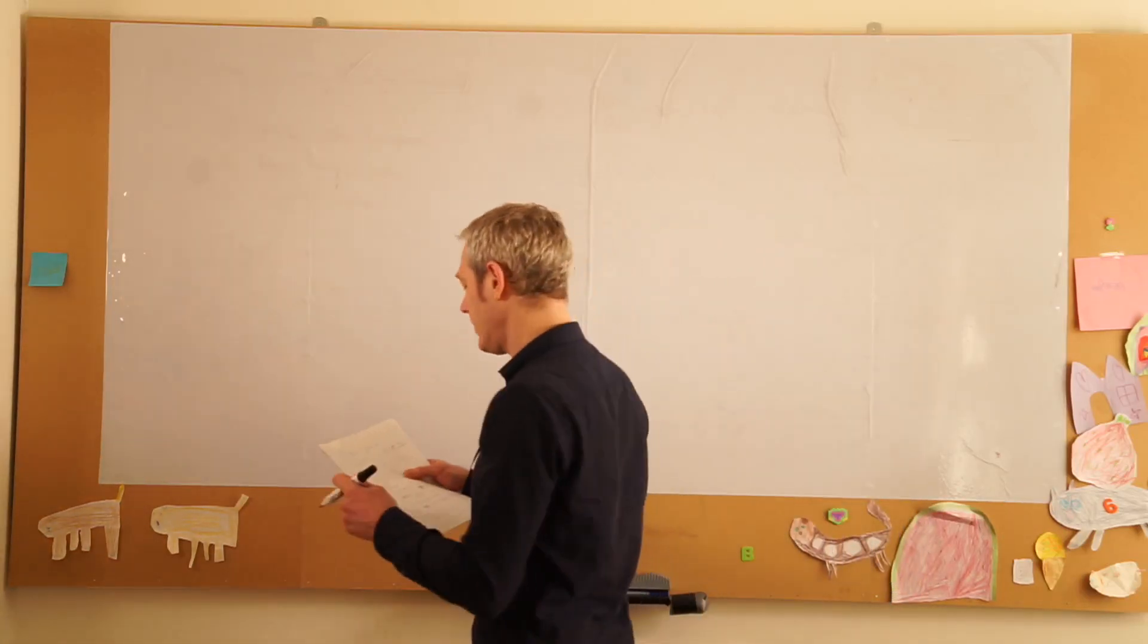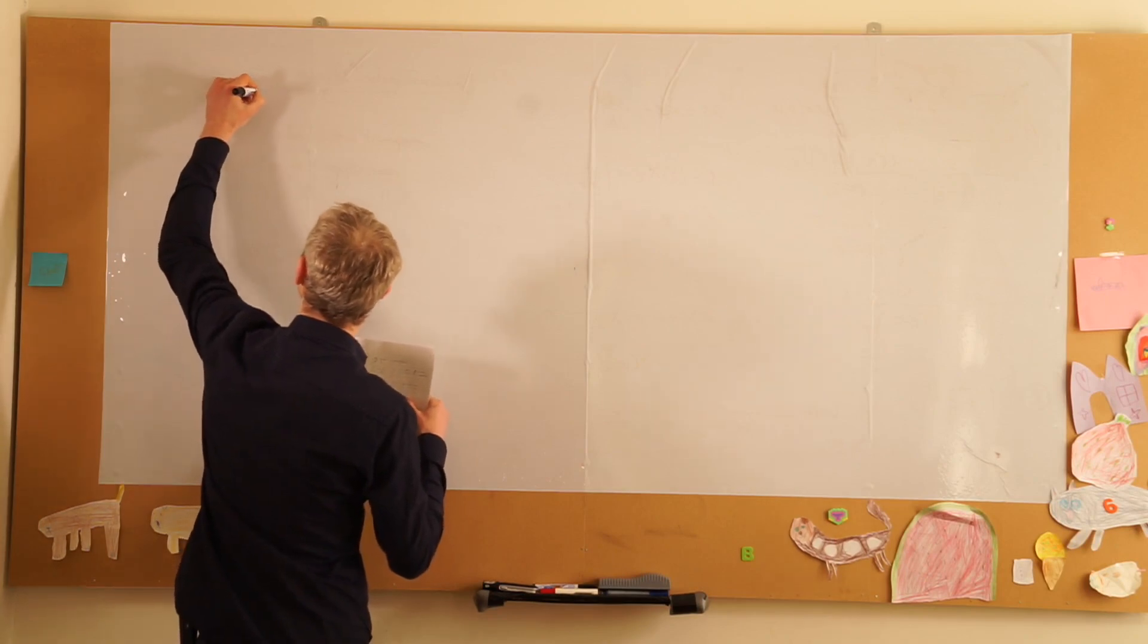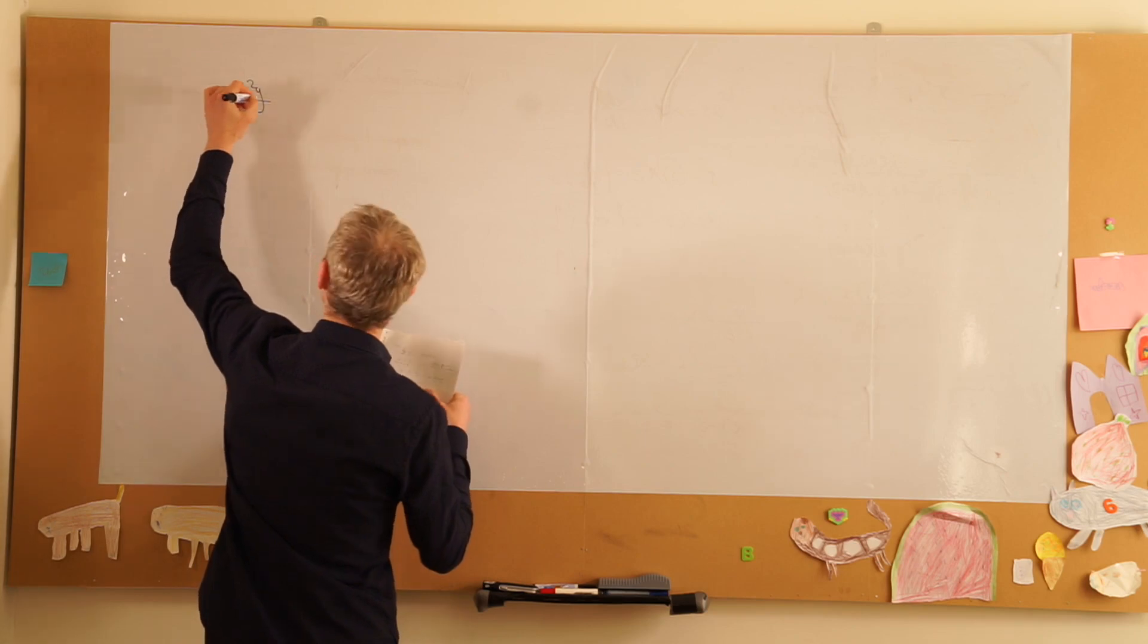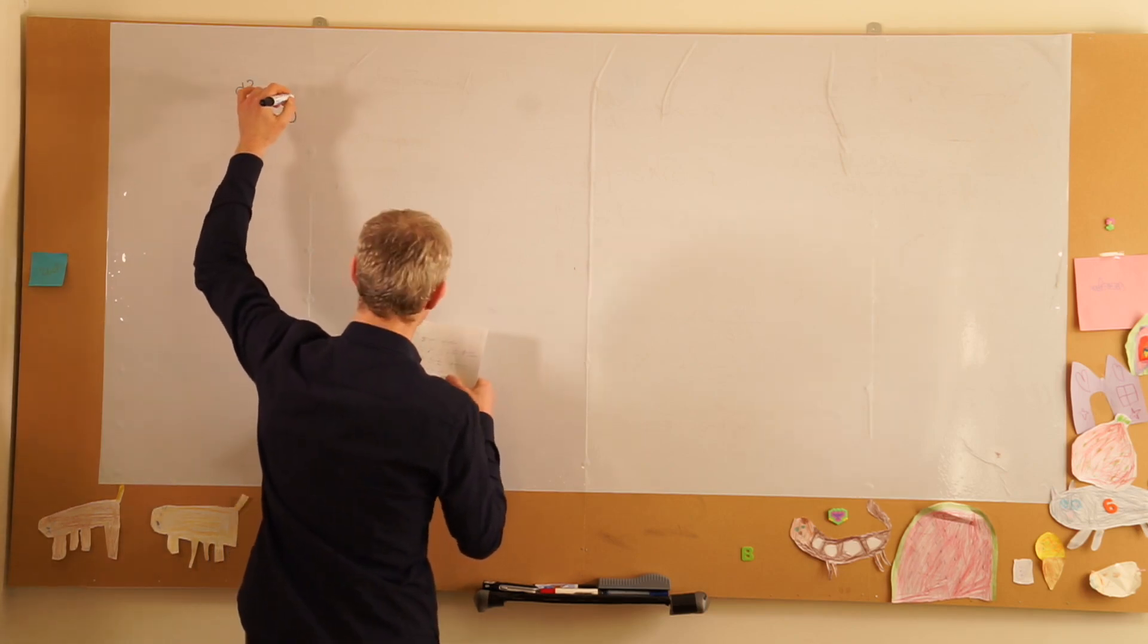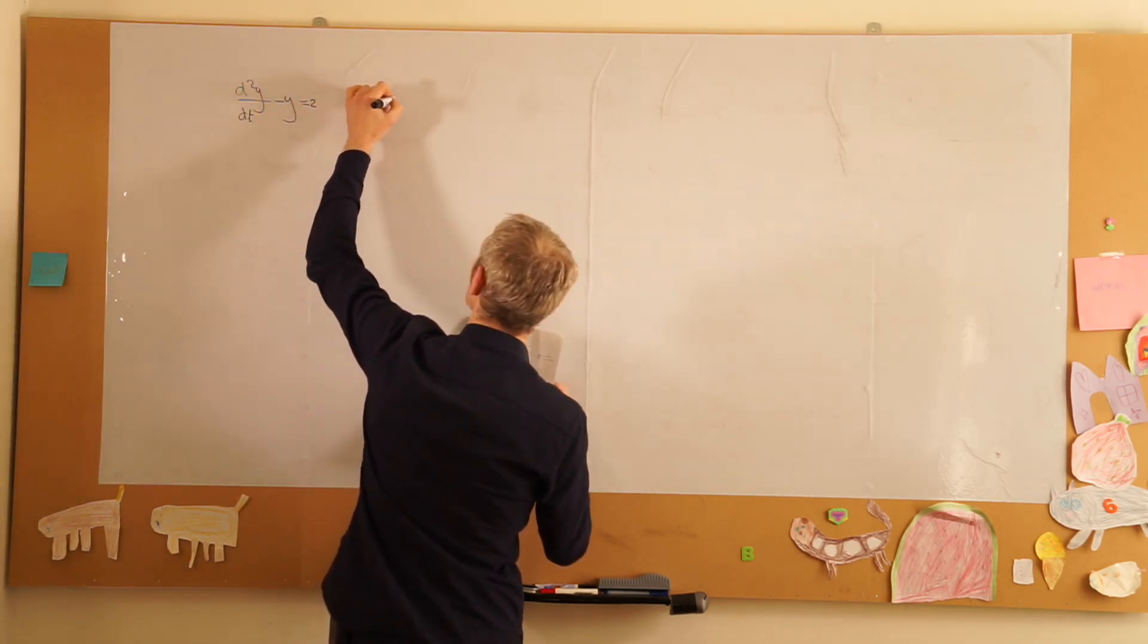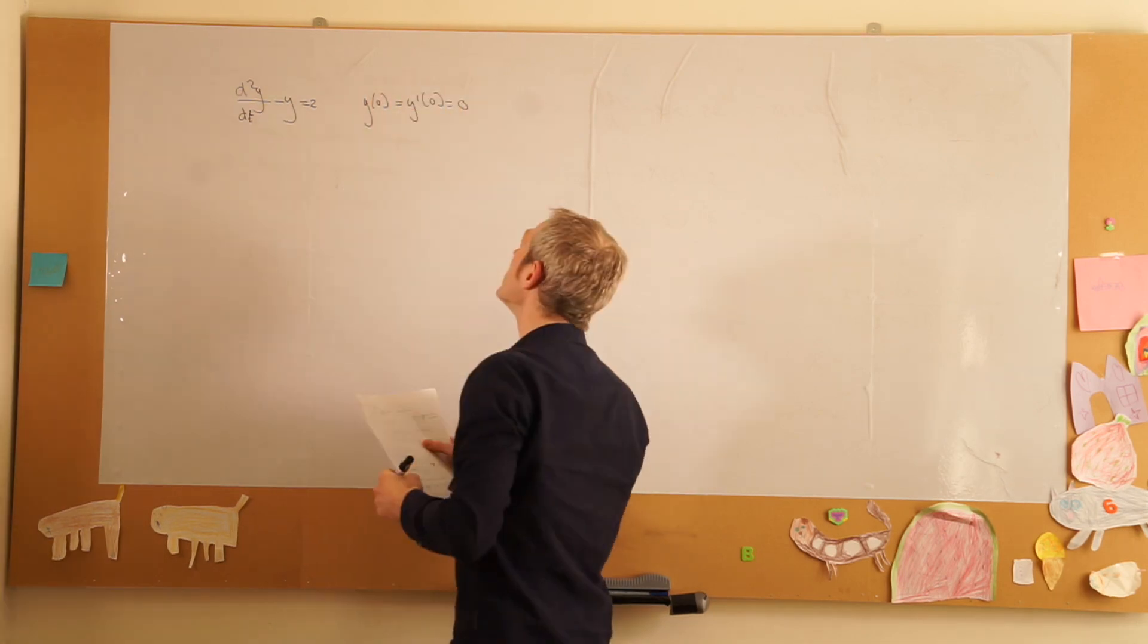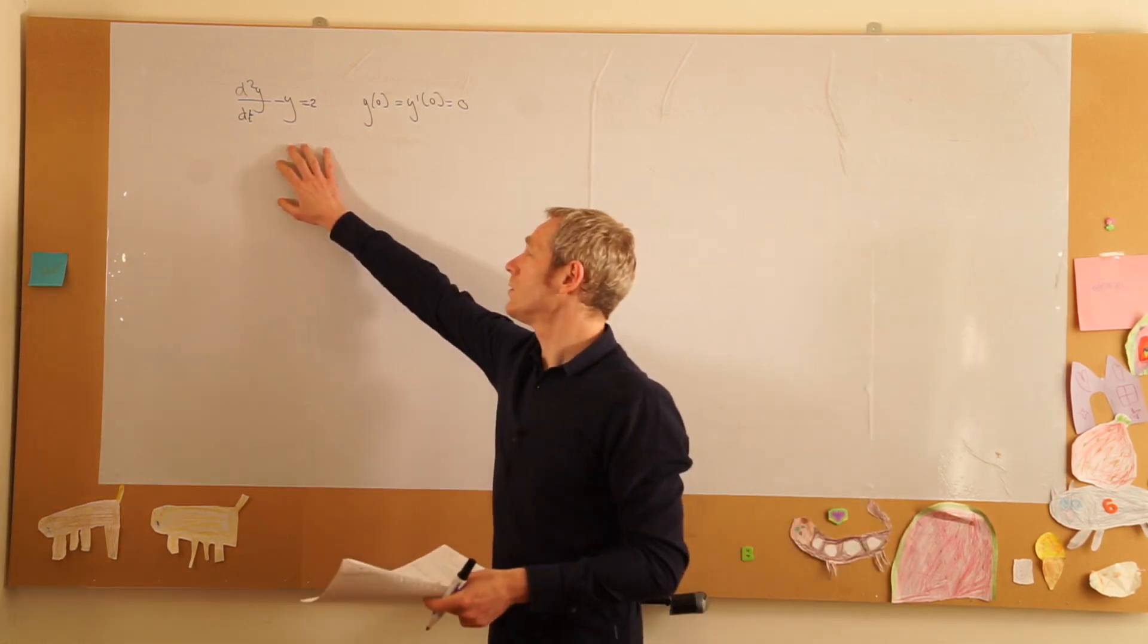Okay, we have another example where we have the second derivative. The second derivative of y minus y is equal to 2, where y(0) is equal to y prime of 0 equals 0. So the initial conditions are both 0 and we have this differential equation.